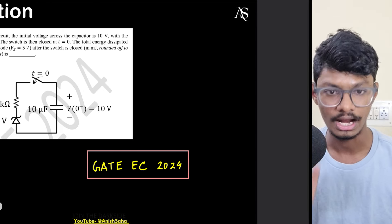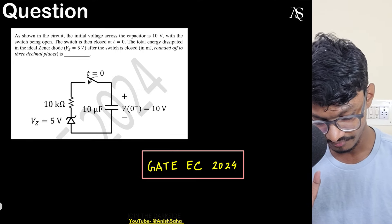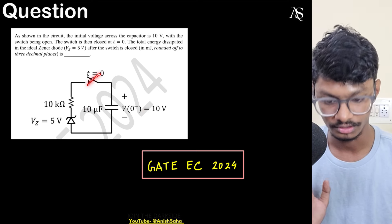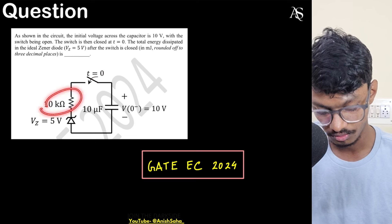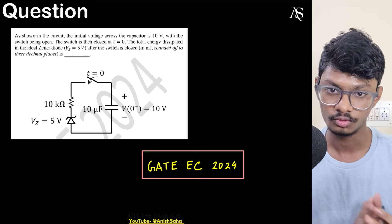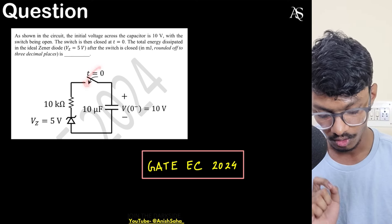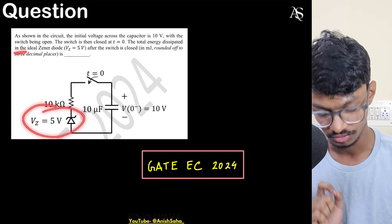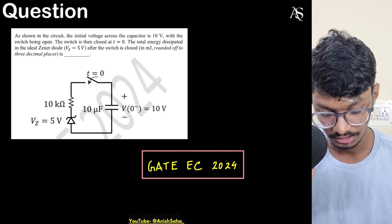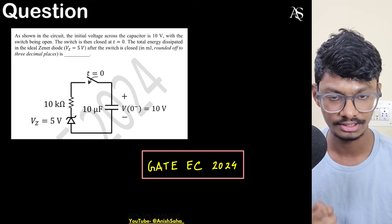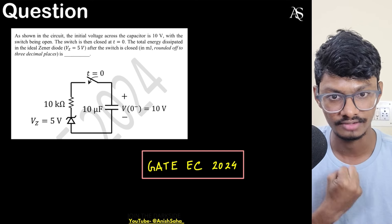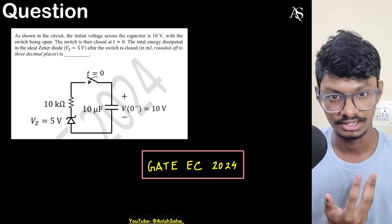Let's understand what will actually happen in this circuit. We have a capacitor which has been initially charged to 10 volts, the switch is on, and it is connected in series with a 10 kilo-ohm resistor and a zener whose breakdown voltage is 5 volts. The question asks: just after closing the switch, what is the total energy dissipated in the ideal zener? The zener is ideal — it has no zener resistance. Energy can only be dissipated across it; it cannot generate energy.